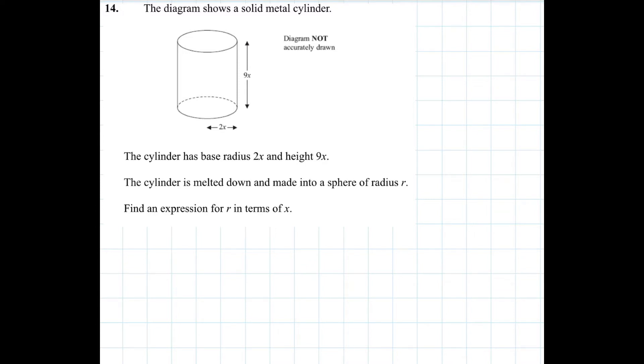Now the bit that might sort of throw most people is this sentence here. The cylinder is melted down and made into a sphere of radius r. Now this isn't any terminology you've come across at all in your GCSE maths course I would assume but what does this actually mean?